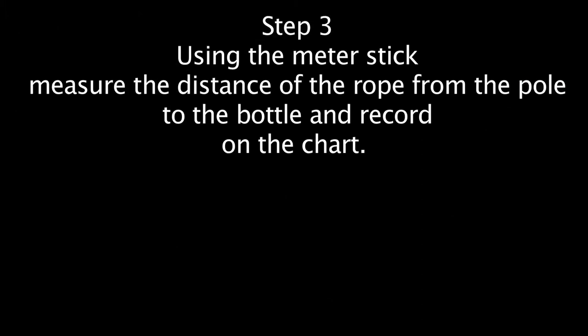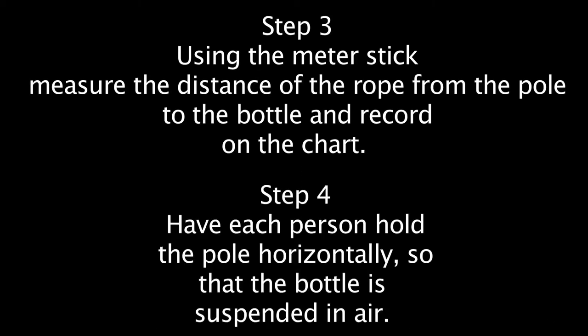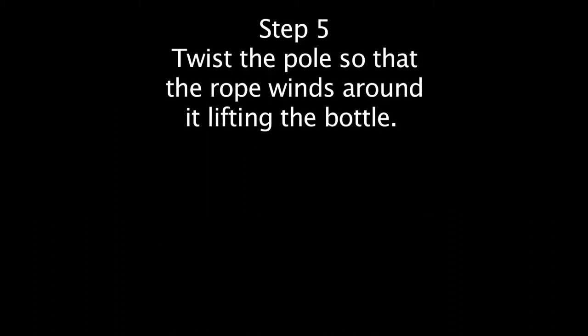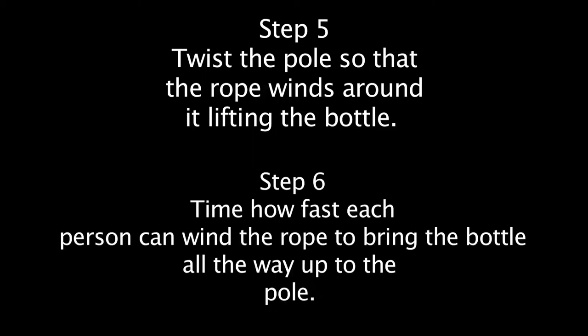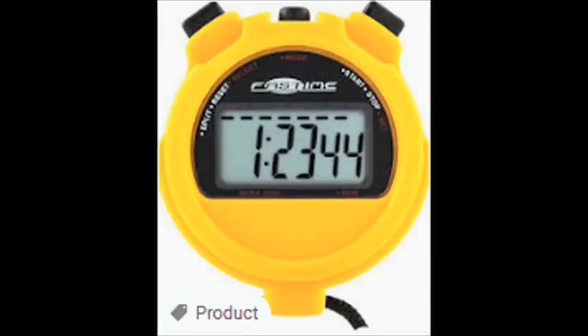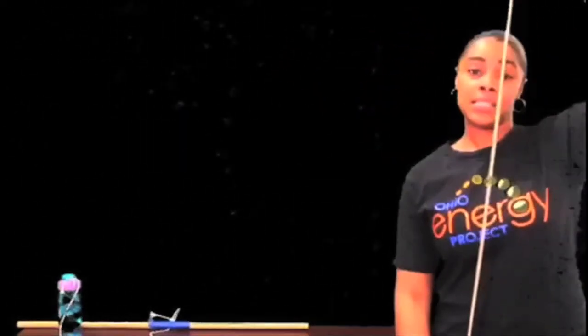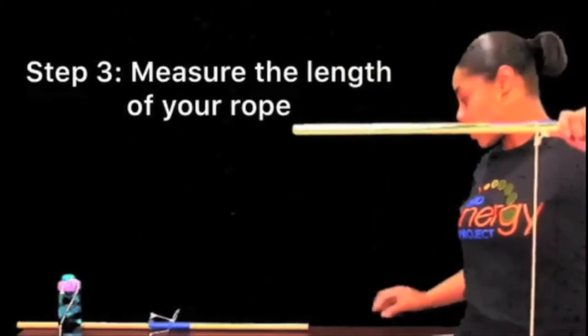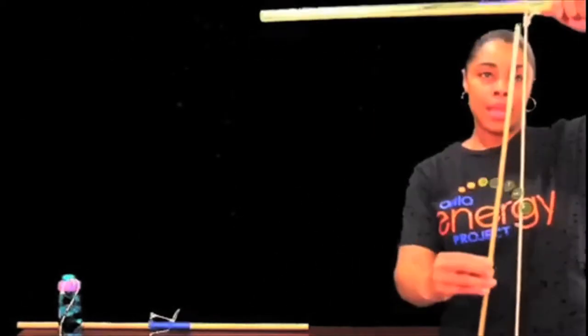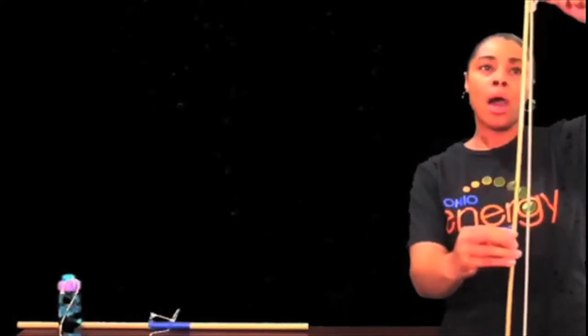Using the meter stick, measure the distance of the rope from the pole to the bottle and record on the chart. Have each person hold the pole horizontally so that the bottle is suspended in air. Twist the pole so that the rope winds around it lifting the bottle. Now time how fast each person can wind the rope to bring the bottle all the way up. Using the meter stick I'm going to measure the distance of the bottle from the dowel rod.